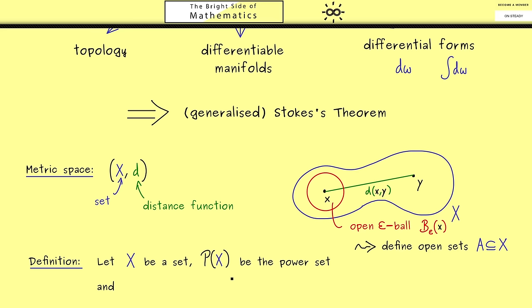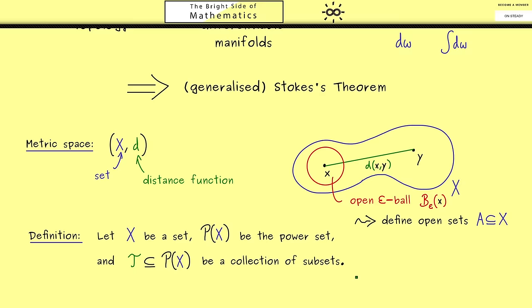Therefore, to say which sets are open, we just have to take a subset of the power set, and this one is denoted by a curved T. In other words, this T just stands for a collection of subsets of X. Now these subsets should be the open sets. Therefore, they have to fulfill all the rules like in the metric space. Indeed, we will fix three important properties here.